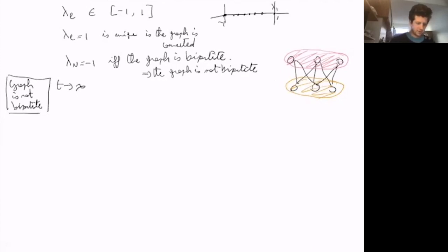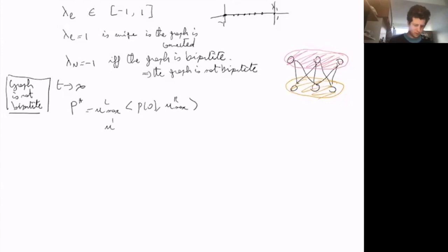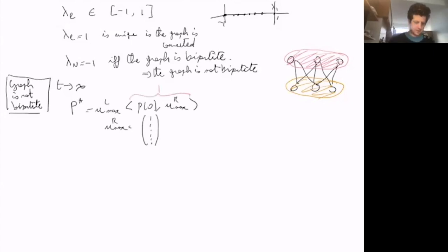The asymptotic state is p* = u_l^{left}_{max} times (p(0) · u_r^{right}_{max}). Since u_r^{right}_{max} equals the vector of ones and p(0) is a probability vector summing to one, this inner product equals one. Thus the asymptotic state is simply given by the left eigenvector of the transition matrix associated to eigenvalue one, as expected.